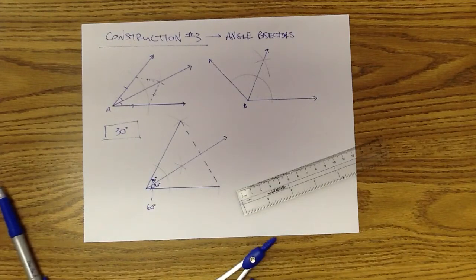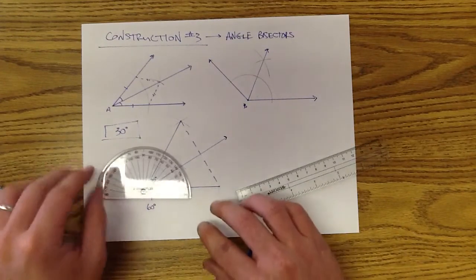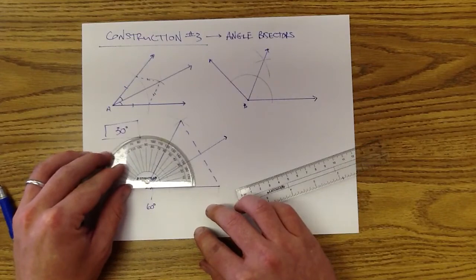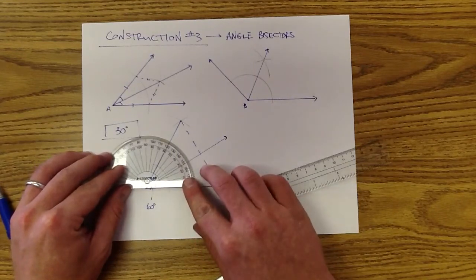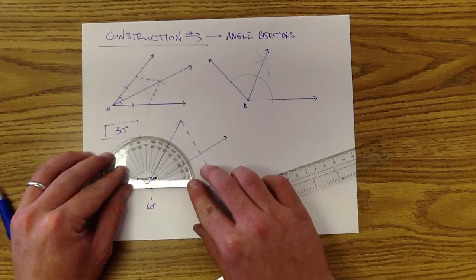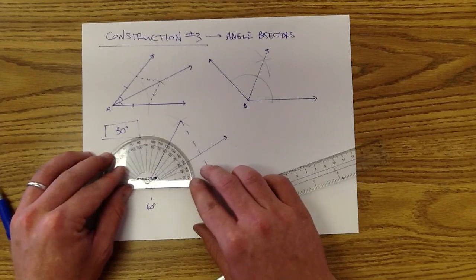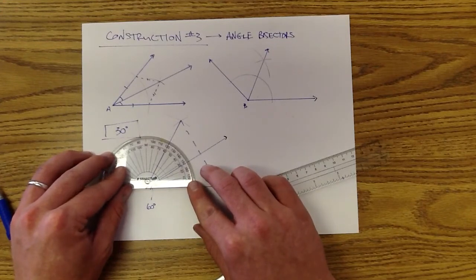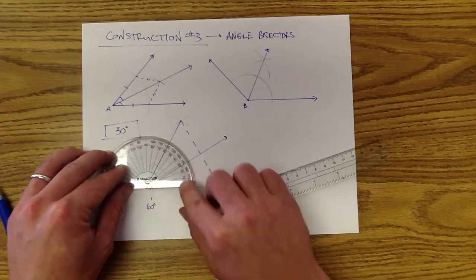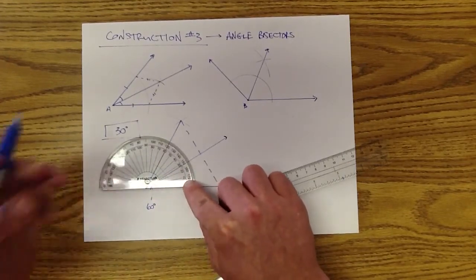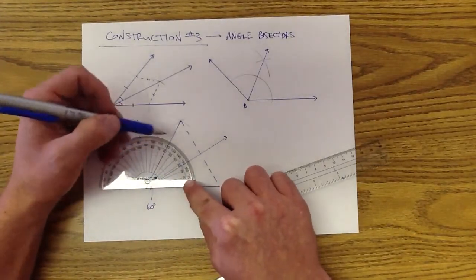If you want, you can take out a protractor here and measure it. And if you did it correctly, depending on your level of accuracy, you can see that my 60 degree angle is pretty much right on. It's going right through the 60 here.